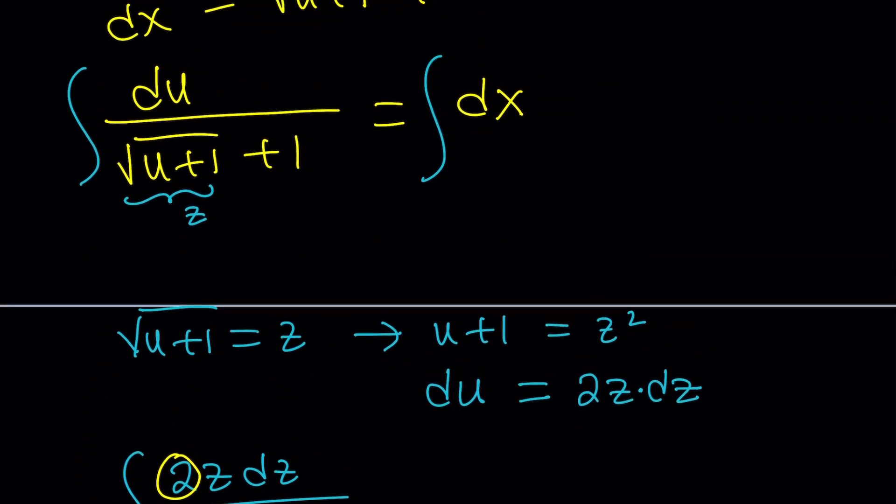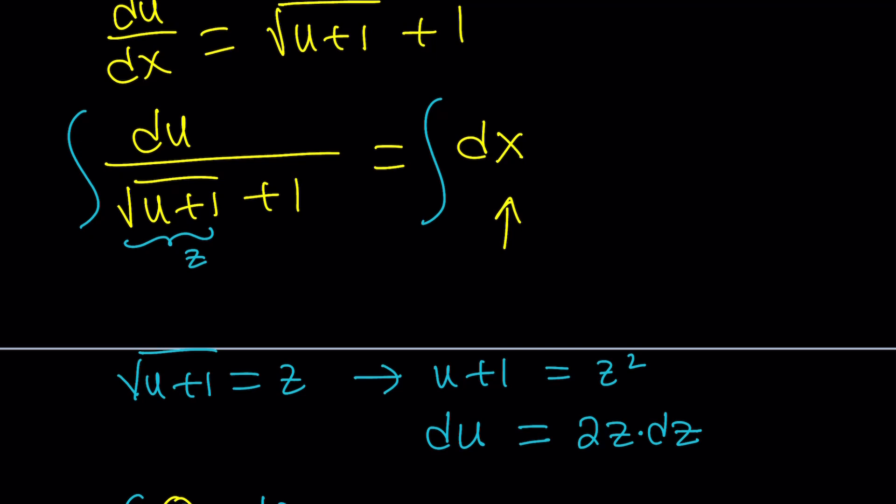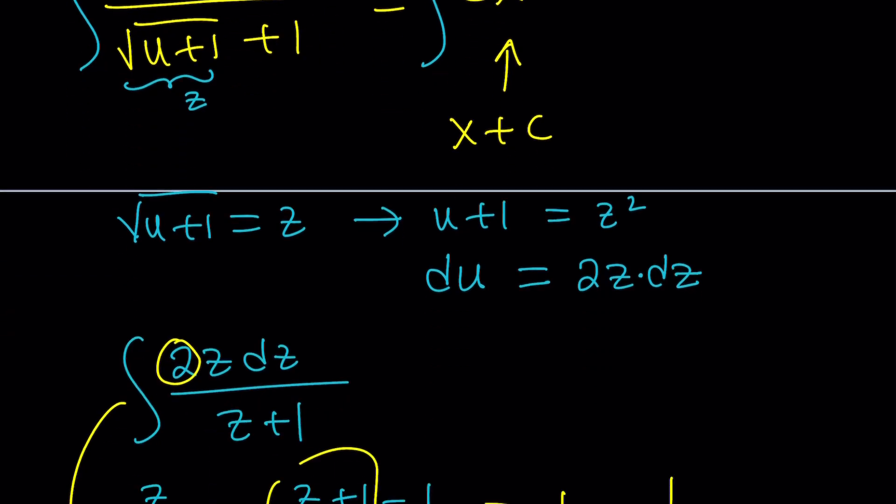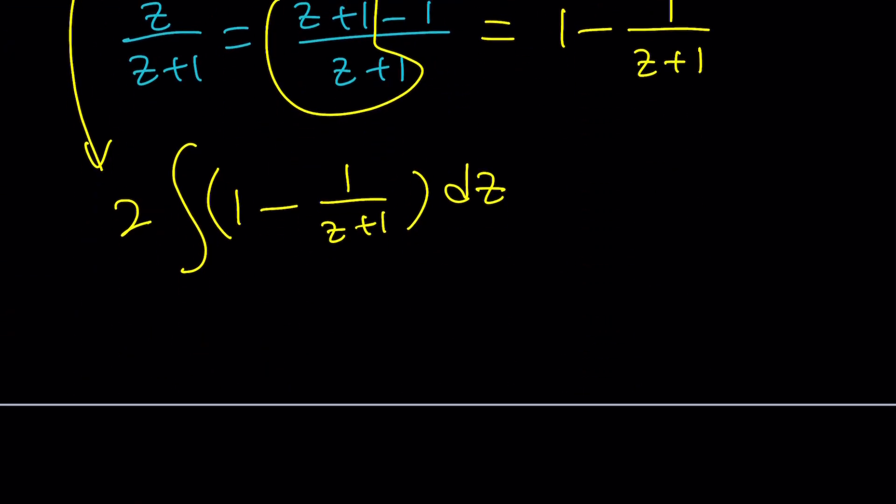And that will be just x plus c. Write the constant because this is just dx, remember? And since I want to keep the constant on the right-hand side, I can just write this as x plus c. You don't have to use the constant twice. So, how do you integrate this? Easy. Assume that z plus 1 is positive. Actually, I think it is. So, this is going to become 2 times z minus ln z plus 1. And, of course, this is equal to x plus c. Okay? So far, so good? Okay, great.